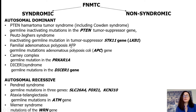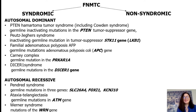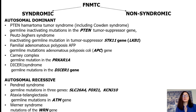Familial adenomatous polyposis — these families have more than 100 polyps at an early age due to germline mutation in the APC gene. These patients are characterized by presence of a typical histological form of papillary thyroid cancer called cribriform papillary thyroid cancer.